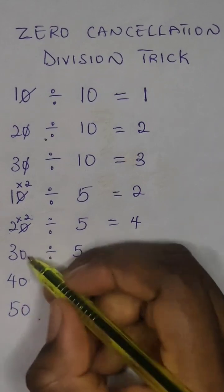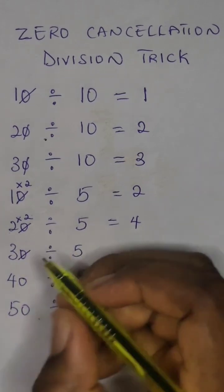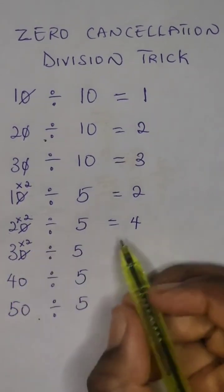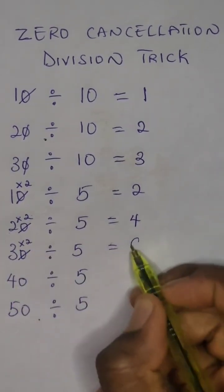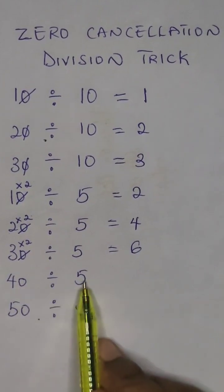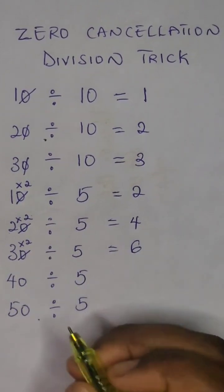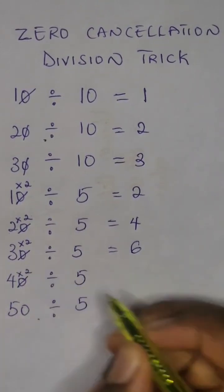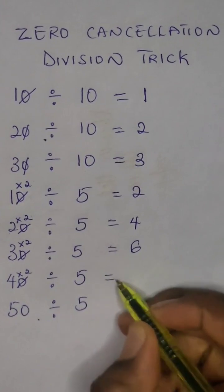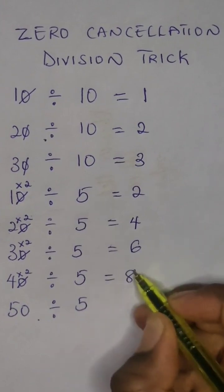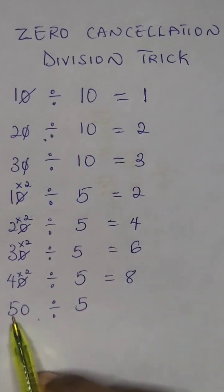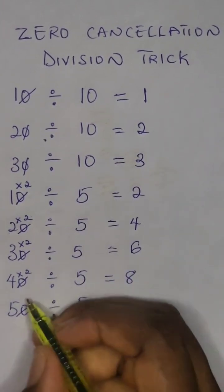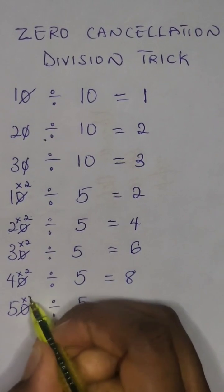40 divided by 5 — cancel out the zero, times 2: equal to 8. 50 divided by 5 — cancel out the zero, times 2: equal to 10.